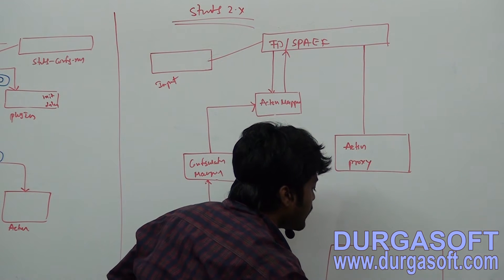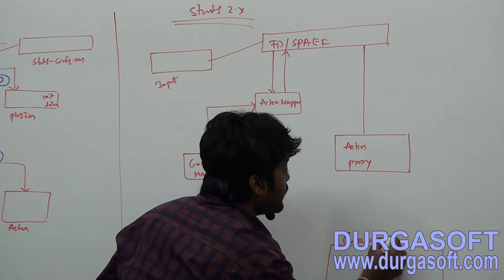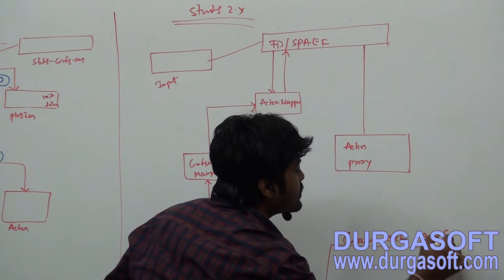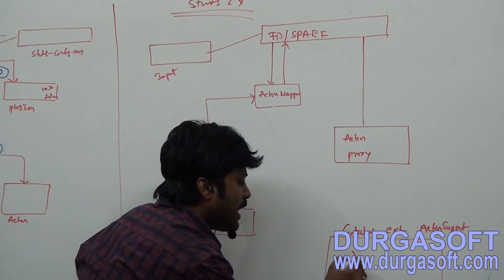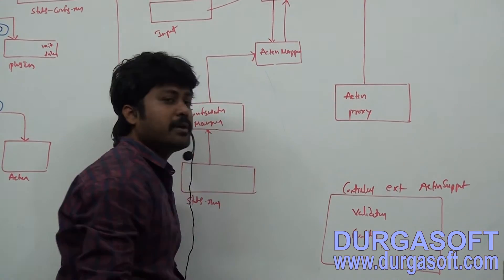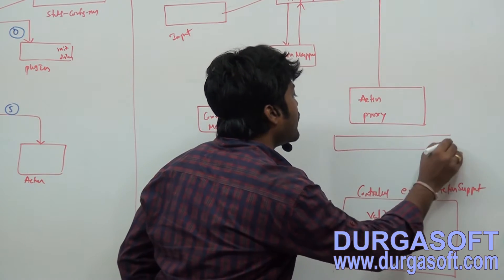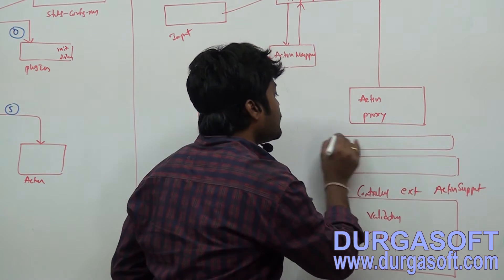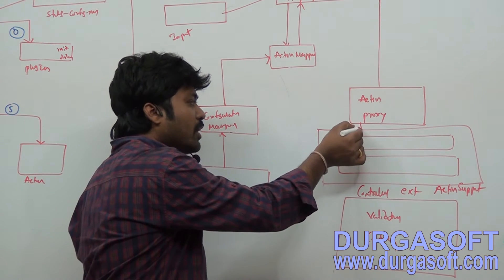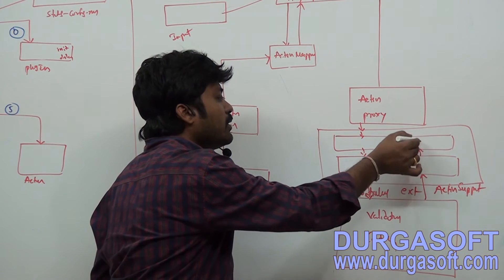ActionProxy will execute your controller. The controller needs to extend from ActionSupport. In this controller, you can do validations and controller operations. Before executing your controller, ActionProxy calls some handler components called interceptors — it calls them one by one, and finally executes your controller.